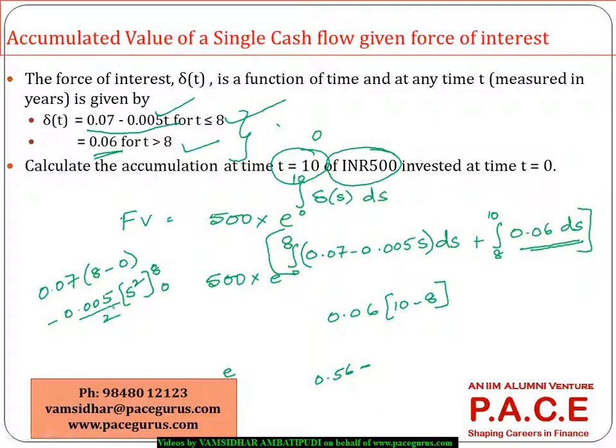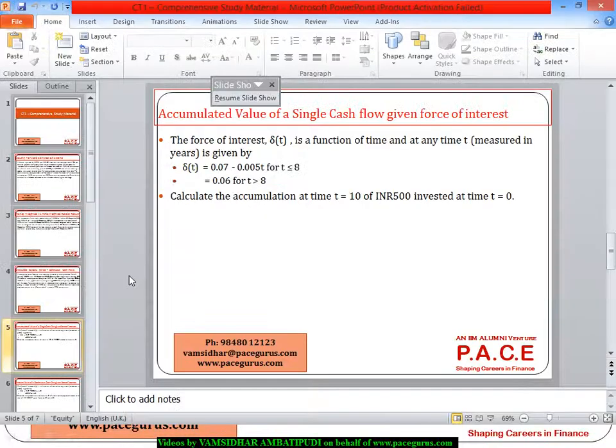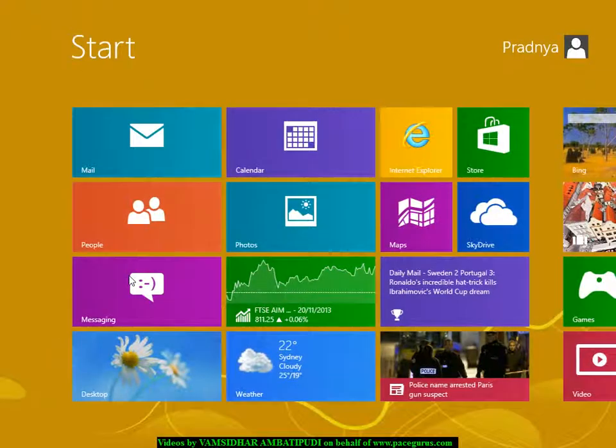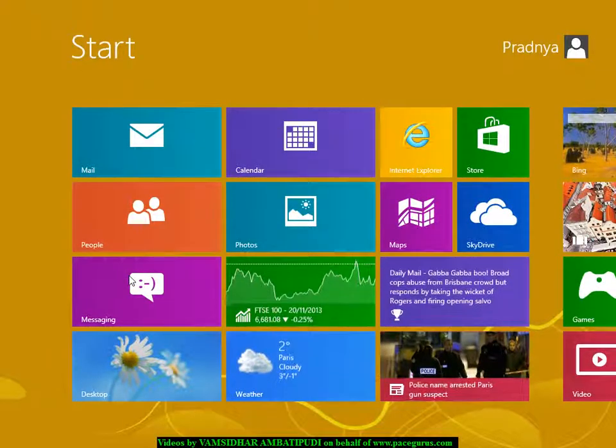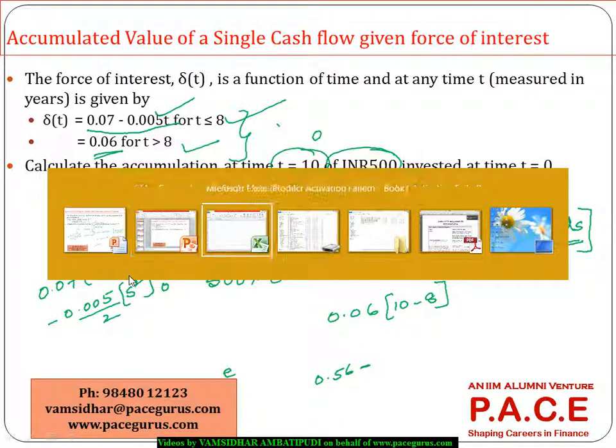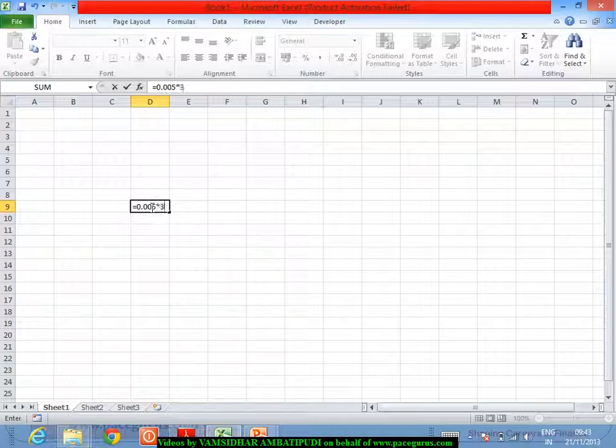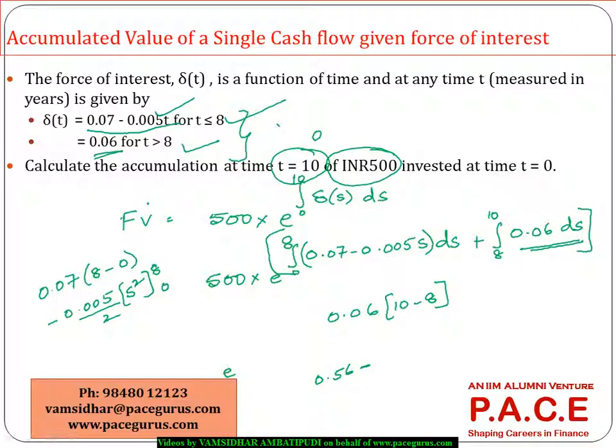0.005 times 32, how much is it? If I compute 0.005 times 32, it's almost 0.16. So 0.56 minus 0.16 plus 0.06 times 2, 0.12. This entirely...